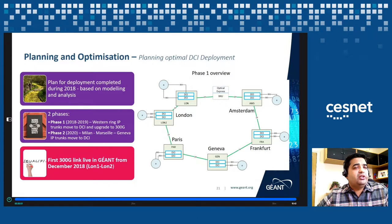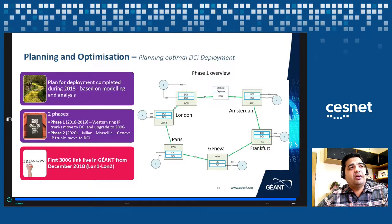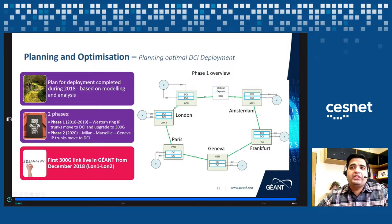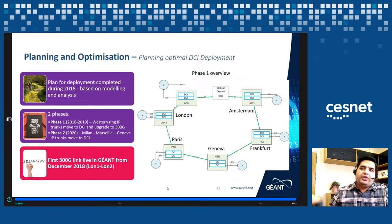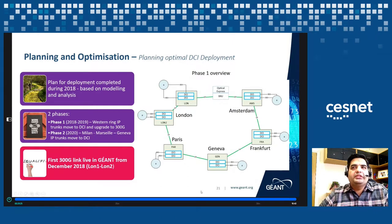Here's phase one of the DCI deployment. We've already completed London 1 and London 2. In the next few months, for all Western Ring links, instead of adding more capacity on the Infinera, we'll be adding it on the DCI, which reduces our operating costs. Then in 2019 and 2020, we'll be adding more DCI boxes across the network wherever needed.